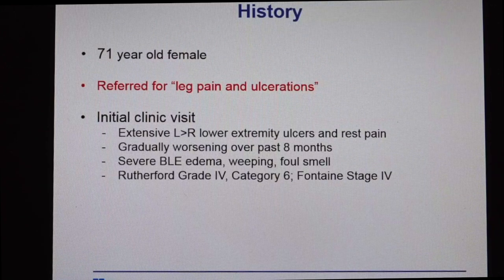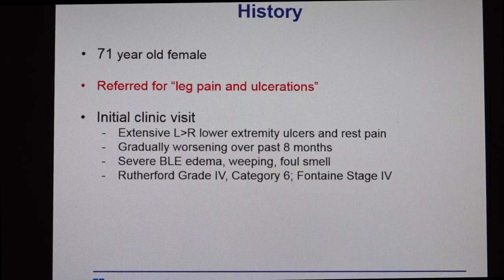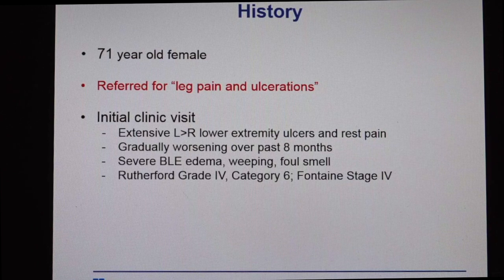This is a case of a 71-year-old female who was referred to us for leg pain and ulcerations. At our initial clinic visit, she had extensive left-sided lower extremity ulcerations and minimal right lower extremity ulcerations with rest pain, severe bilateral lower extremity edema — weeping, foul-smelling — all consistent with Rutherford 6 critical limb ischemia.